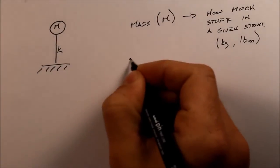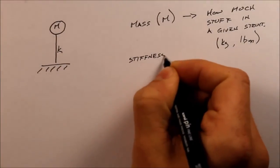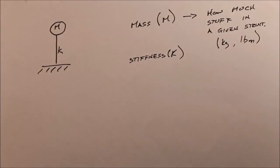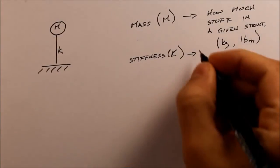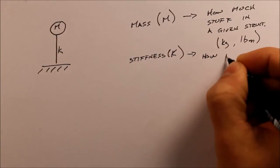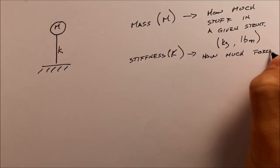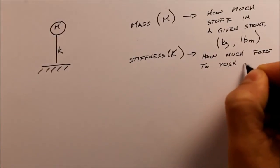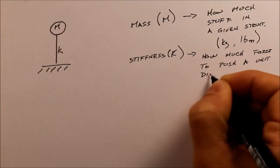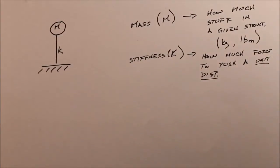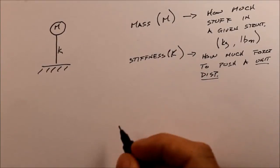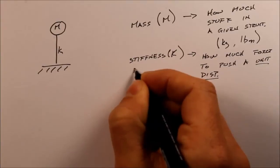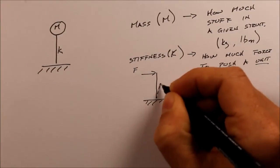And stiffness of a structure is noted by the symbol K. And stiffness is how hard it is to push the thing. More specifically, it's how much force to push a unit displacement. And what I mean by this unit displacement is if, say, we had a stick planted in the ground, and we put a force on that stick, and the stick was going to move over one unit.